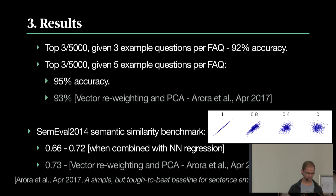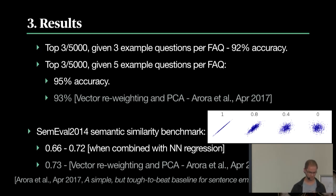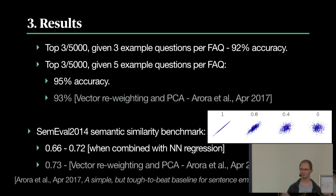There's also a SemEval task — semantic relatedness — where instead of just whether sentences are the same, it gives a score of how related they are, testing the system against human-labeled relatedness scores. We score a Pearson correlation between 0.66 and 0.72, where 0.72 is when combining with neural network regression, making it semi-supervised. There we do not yet beat the reference, but we're sure we can.